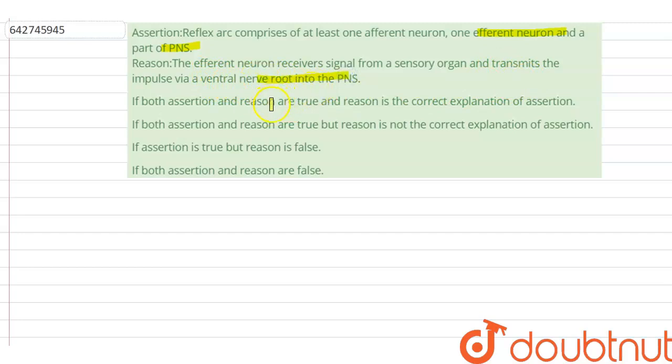And the options are: both assertion and reason are true and reason is the correct explanation of the assertion; if both assertion and reason are true but reason is not the correct explanation of assertion; if assertion is true but reason is false; if both assertion and reason are false.